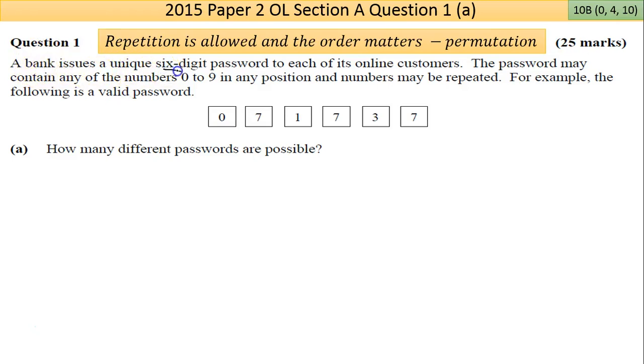Question 1: A bank issues a unique six-digit password to each of its online customers. The password may contain any of the numbers from zero to nine. So let's explore that: 0, 1, 2, 3, 4, 5, 6, 7, 8, 9—there's ten digits there. For six-digit passwords, here for example the following is a valid password: 0-7-1-7-3-7. How many different passwords are possible? And really important: numbers can be repeated, so repetition is allowed.